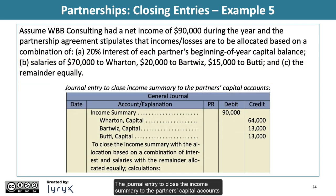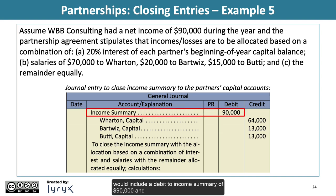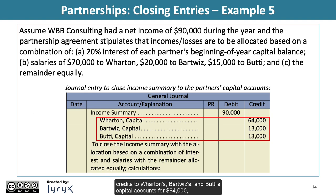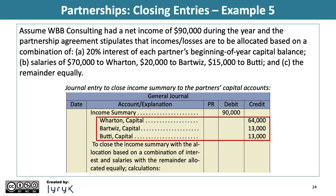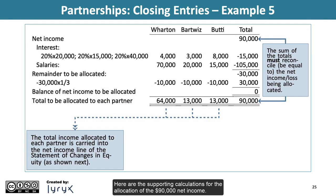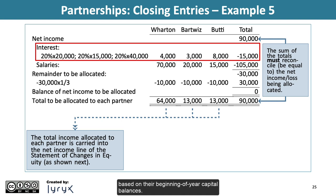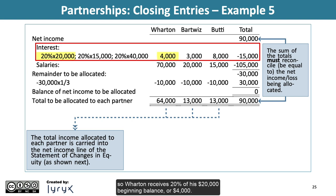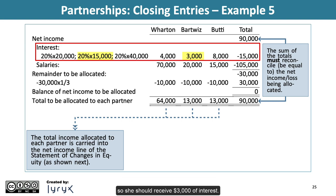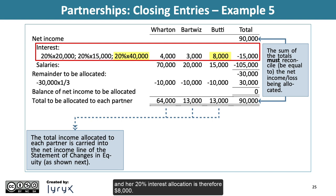The journal entry to close the income summary to the partners' capital accounts would include a debit to income summary of $90,000 and credits to Wharton's, Bartwiz's, and Beauty's capital accounts for $64,000, $13,000, and $13,000, respectively. Interest is applied at 20% on beginning balances: Wharton receives 20% of $20,000, or $4,000; Bartwiz has a beginning balance of $15,000, so she receives $3,000; Beauty has a beginning balance of $40,000, so her interest allocation is $8,000.